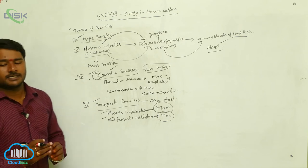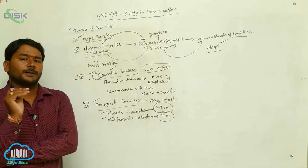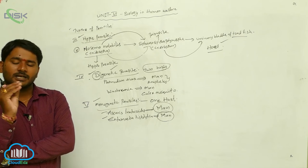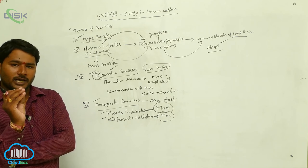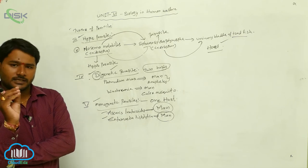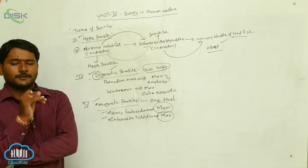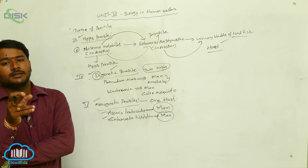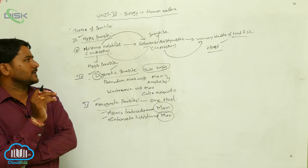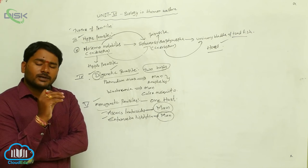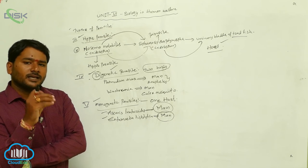This covers the types of parasites. There are different types: first, ectoparasites — parasites living on the body surfaces of hosts, such as head lice on man, itch mites on man, ticks on dogs, and copepods on marine fishes. Next, endoparasites — parasites living inside the host body.